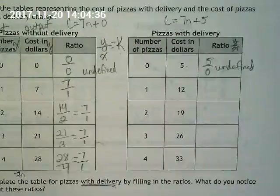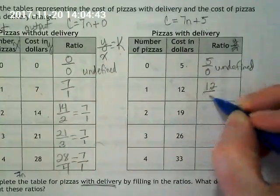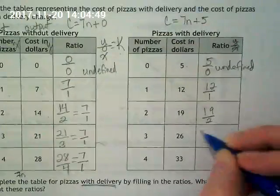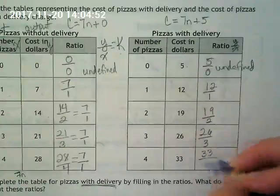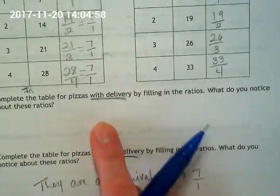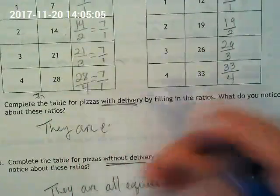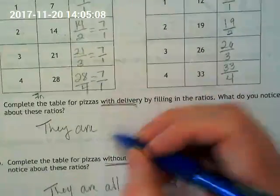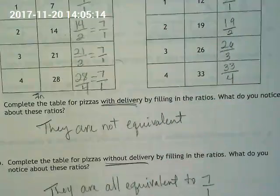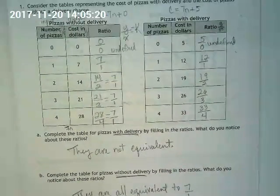What do we have here? Twelve over one. And then nineteen over two. Twenty-six over three. Thirty-three over four. Are those equivalent to each other? No. So when it asks us down here what do we notice about these ratios? They are not equivalent. The delivery fee really messes with things doesn't it?